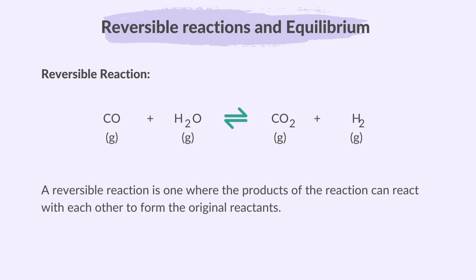In a reversible reaction, the reaction can proceed in both directions, and this is shown by a special double-arrow symbol. So if a chemical equation has this symbol instead of the normal arrow, we know it's a reversible reaction and it can go forward or backward.